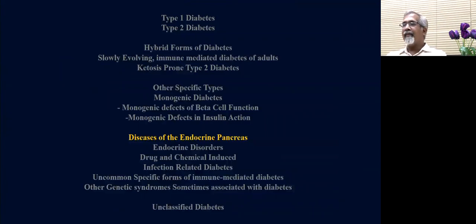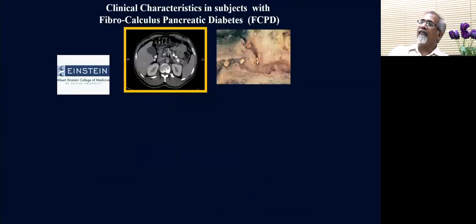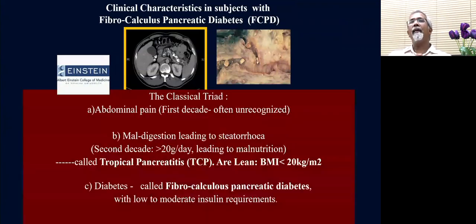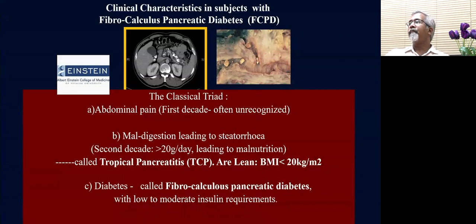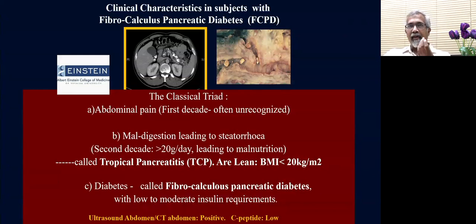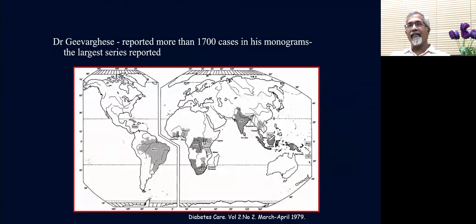Next are disorders of the endocrine pancreas — fibrocalcific pancreatic diabetes. This classically presents with abdominal pain in the first decade, maldigestion or steatorrhea in the second decade, and uncontrolled glucose levels in the third decade above the age of 20 years. Imaging is critical — a shrunken pancreas with duct dilatation and exquisite intraductal calcification on CT scans. C-peptide levels are low. It is classically described only in tropical regions, suggesting an environmental-genetic interaction that we know very little about.